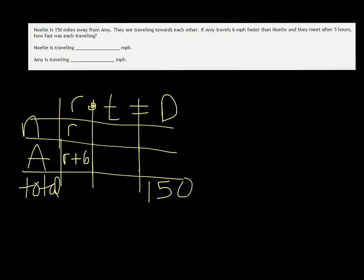It says they meet after 5 hours, so they're both traveling for 5 hours. So if you multiply the R and the T, we get 5R for Noelle and 5 times R plus 6 for Amy.